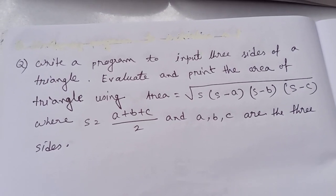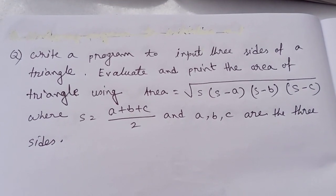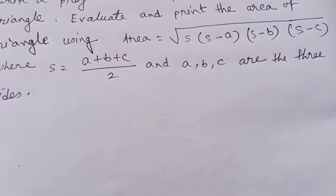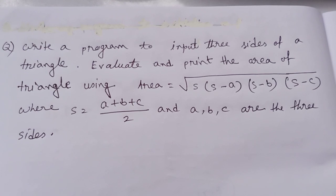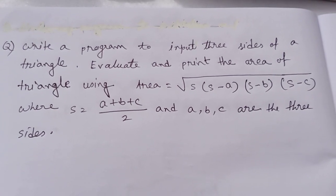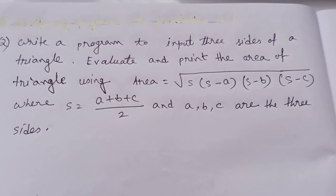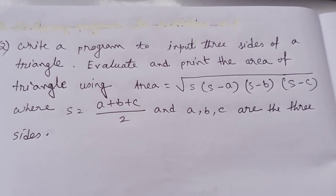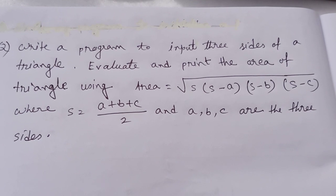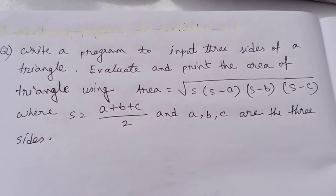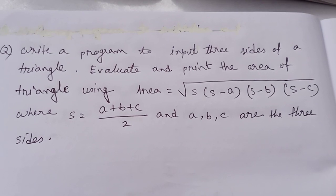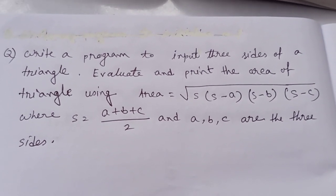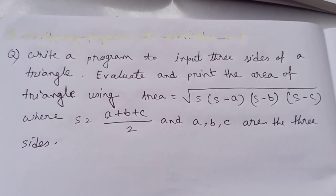Today's question: write a program to input three sides of a triangle. Evaluate and print the area of the triangle using the formula — area equals root over s into s minus a, into s minus b, into s minus c — where s equals a plus b plus c divided by 2, and a, b, c are the three sides of the triangle.